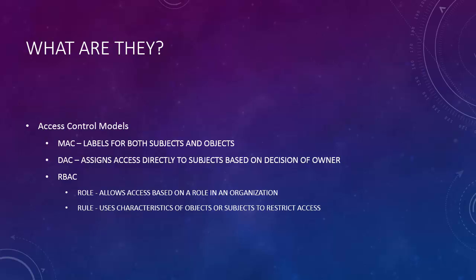In rule-based access control, it uses characteristics of objects or subjects along with rules to restrict access. If all characteristics match, access is either allowed or denied based on that rule.